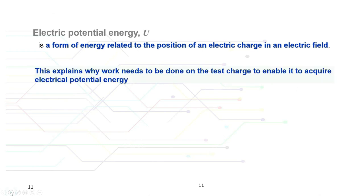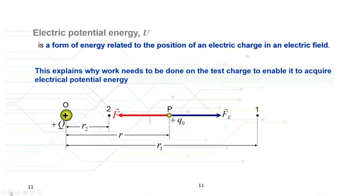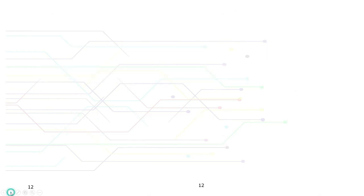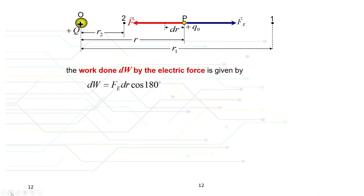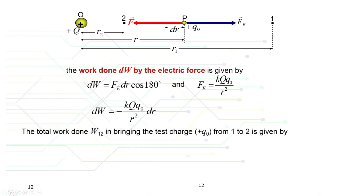Suppose a positive point charge q is held stationary at point O, exerting a repulsive force F_e on the positive test charge at point P. Points 1 and 2 are on the line passing through O and P. The work done by the electric force is given by the equation dW = −kqq₀/r² dr.